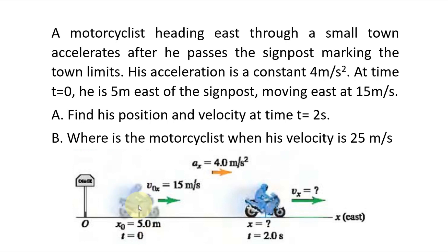At time t equals 0, the motorcyclist's initial position is 5 m, his initial velocity is 15 m per second, and his constant acceleration is 4 m per second squared. We need to compute his final position and velocity at t equals 2 seconds.